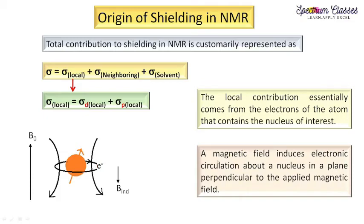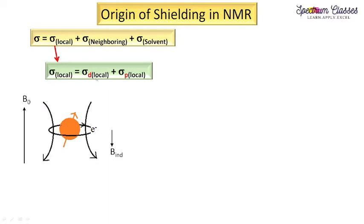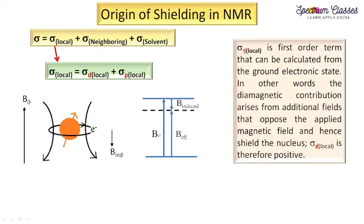One important point for beginners: an applied magnetic field induces electronic circulation about the nucleus in a plane perpendicular to the applied magnetic field. Now, for sigma d — d stands for diamagnetic — the induced field is in the upward direction while the opposing field is in the opposite direction. This diamagnetic shielding is a first-order term.